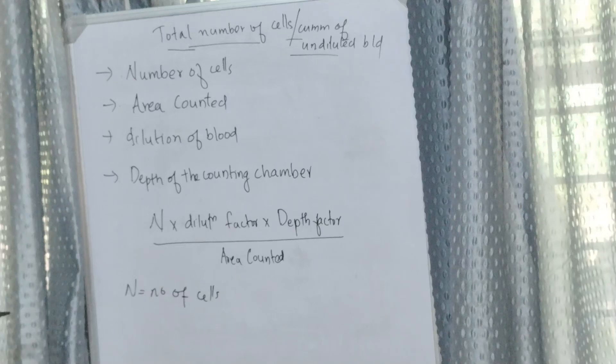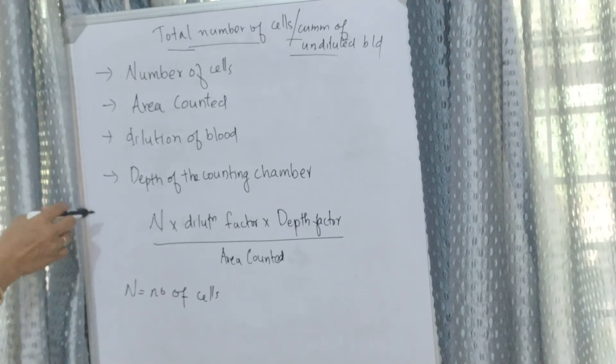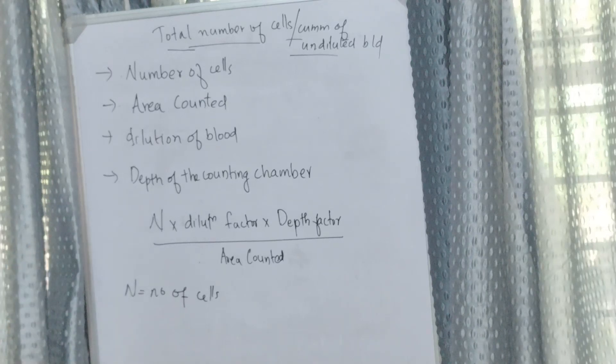We commonly use two types of counting chambers: improved Neubauer counting chamber and for CSF, Fuchs-Rosenthal counting chamber. Improved Neubauer counting chamber has depth of 0.1 millimeter and Fuchs-Rosenthal 0.2 millimeter.